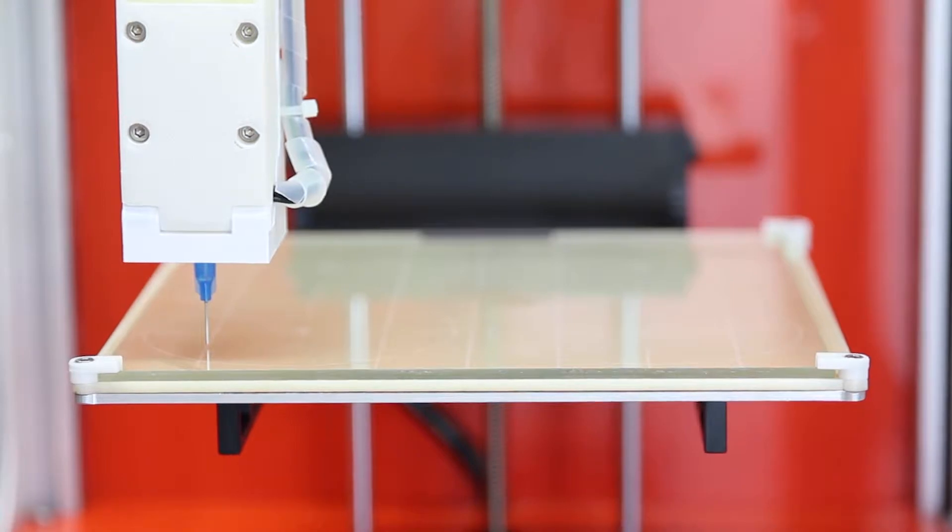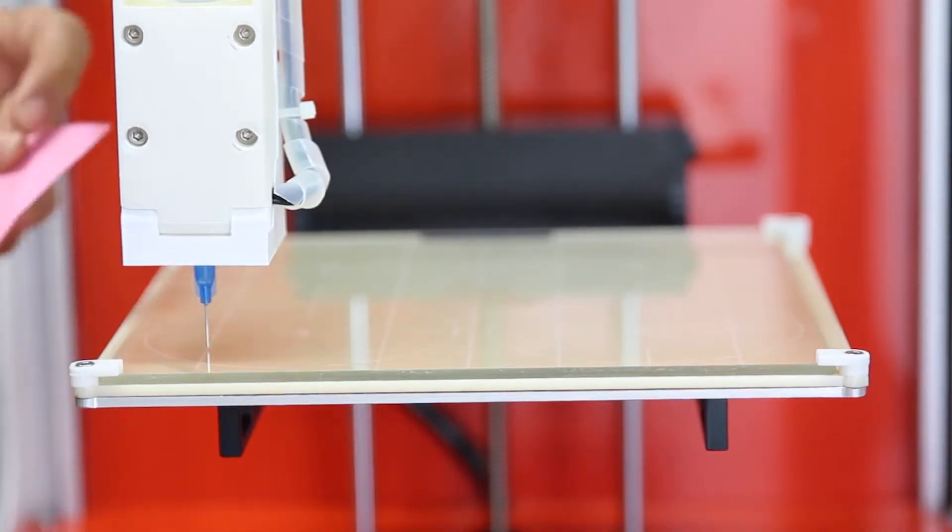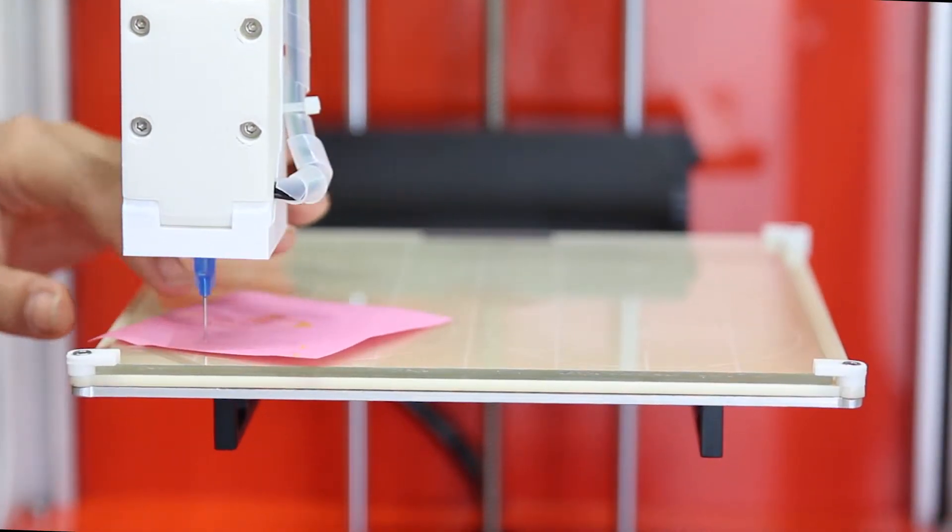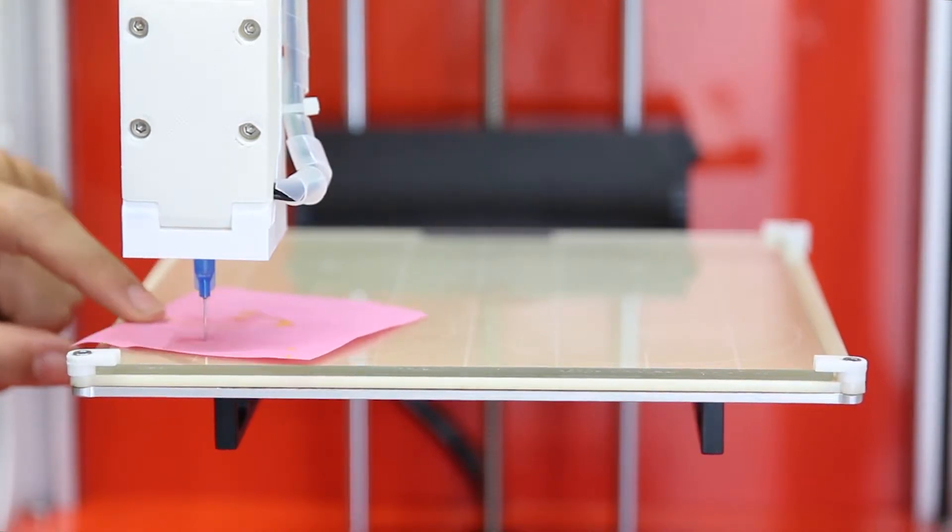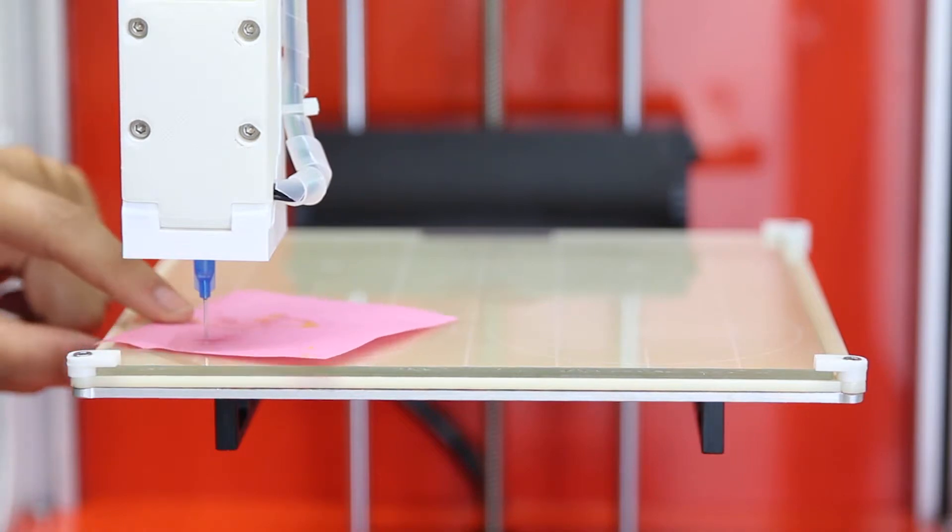Next, prime your syringe and set the Z0 position. If you are printing on the glass bed, set the Z0 to the glass. If you are printing on a template, print it to the lowest position on the template.